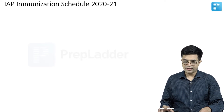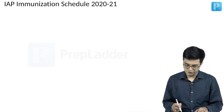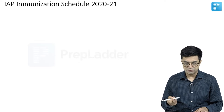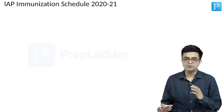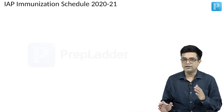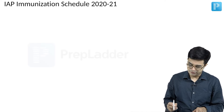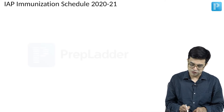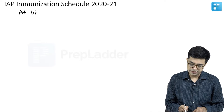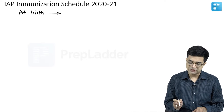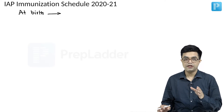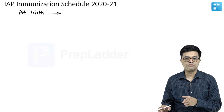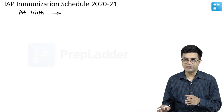Instead of showing you the table, I will be writing it down, so it will be easy to explain the differences in detail. First of all, when you talk about at birth, in the case of the national immunization schedule, we are giving BCG, zero dose of OPV, and zero dose of hepatitis B.